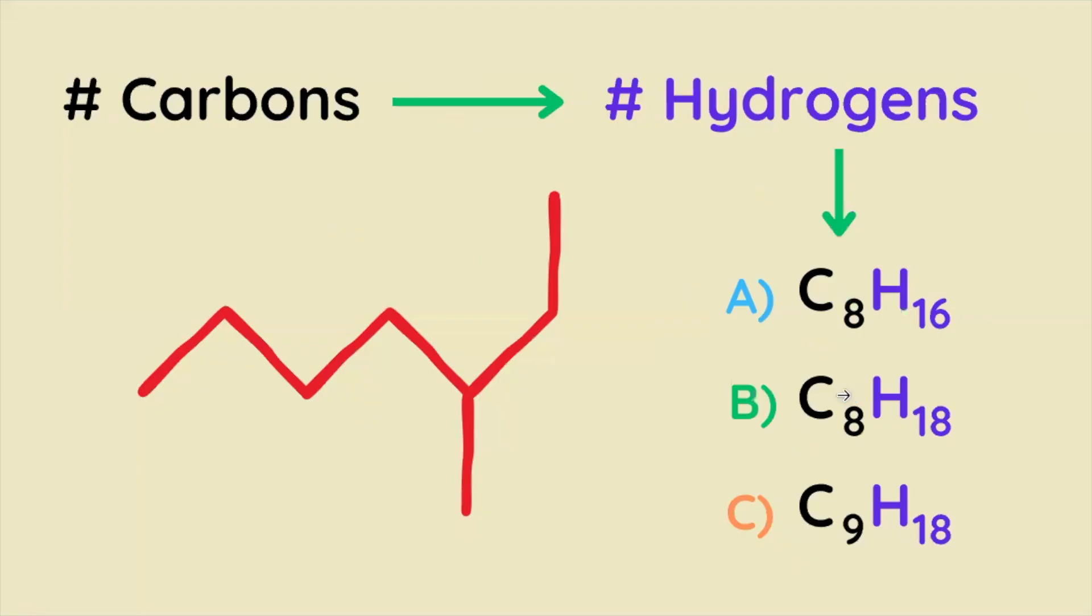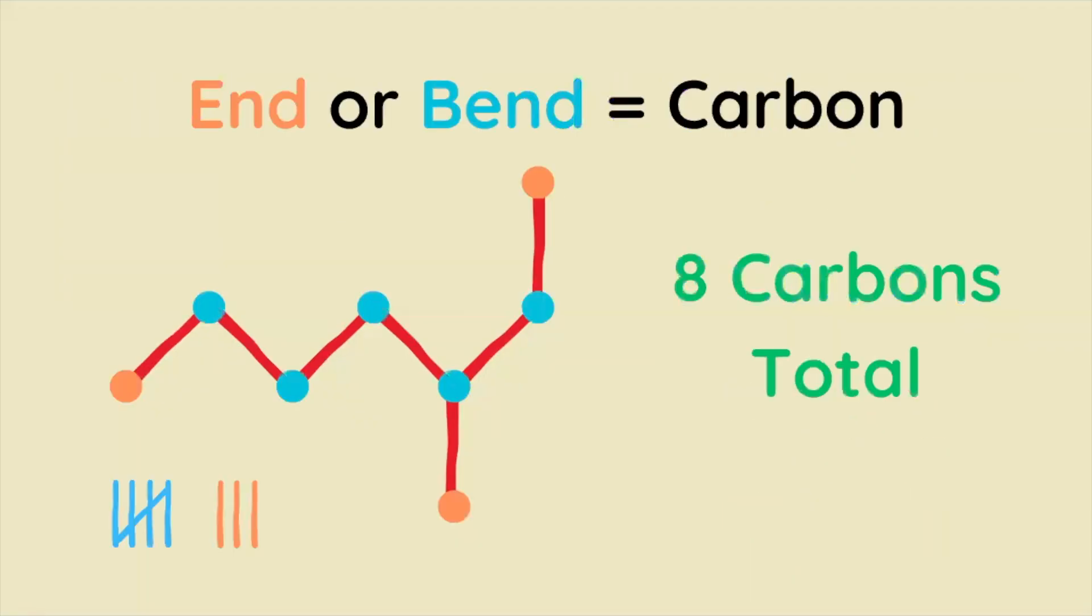So how many carbons does this organic molecule have? The answer is 8 because carbons are represented as ends and bends. Here we have 5 bends and 3 ends.